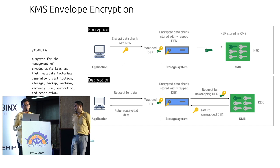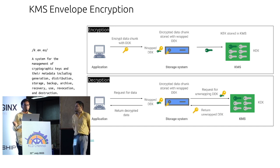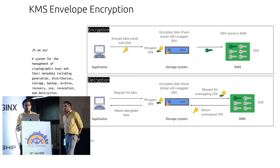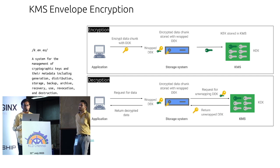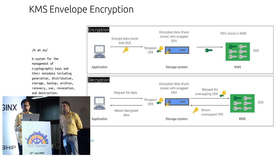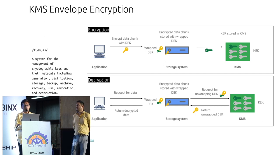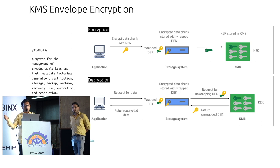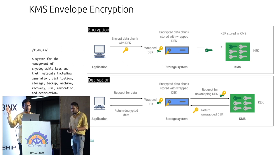During decryption, the encrypted DEK goes to the remote KMS server, gets decrypted, and that decrypted DEK is used to decrypt the data. The advantage of envelope encryption is that your key encryption key (KEK) never gets stored alongside your data — it always resides on some external remote server. An attacker cannot access the KEK because it is backed by cloud providers, which acts as the root of trust.